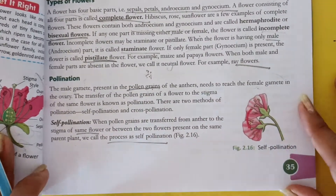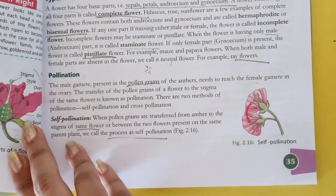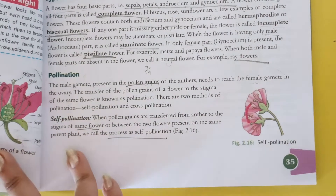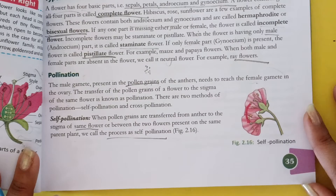Aisa jo pollination hota hai, woh two types ka hota hai: self pollination and cross pollination.